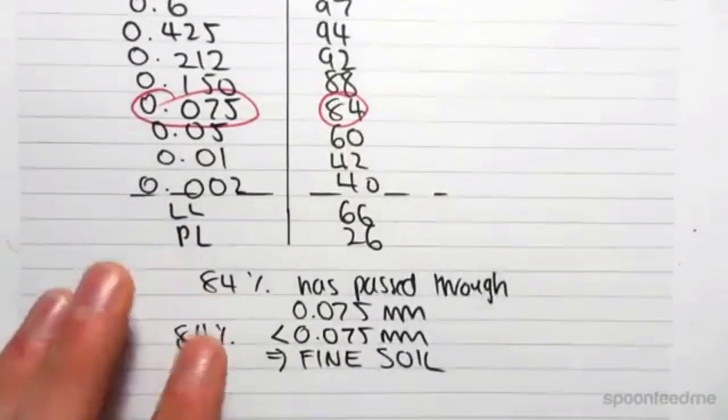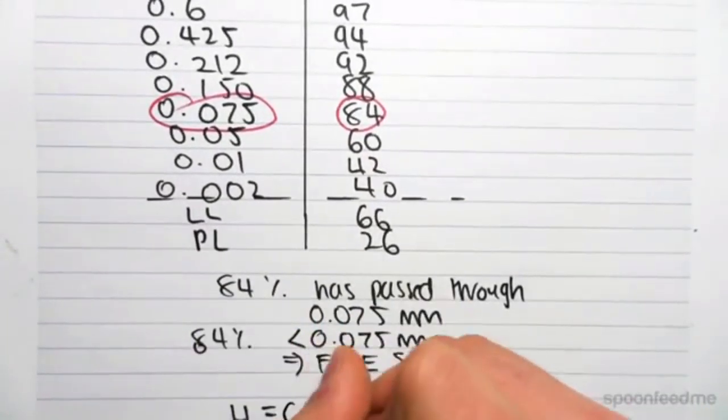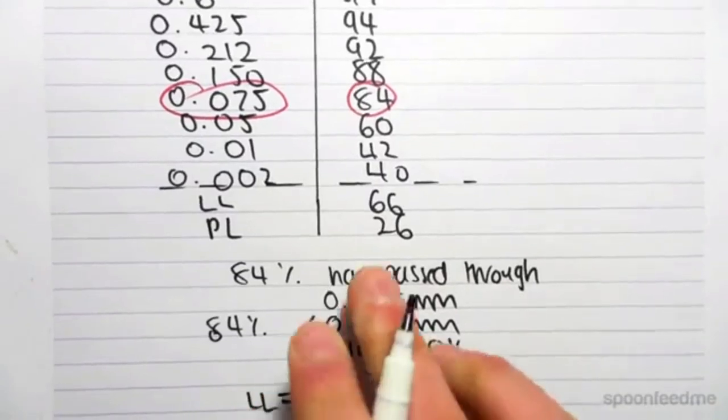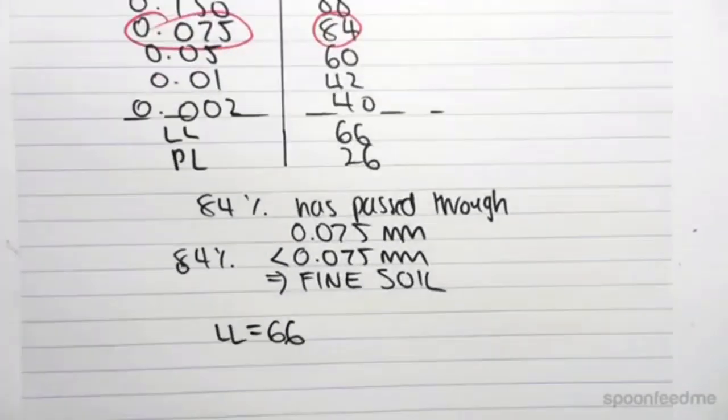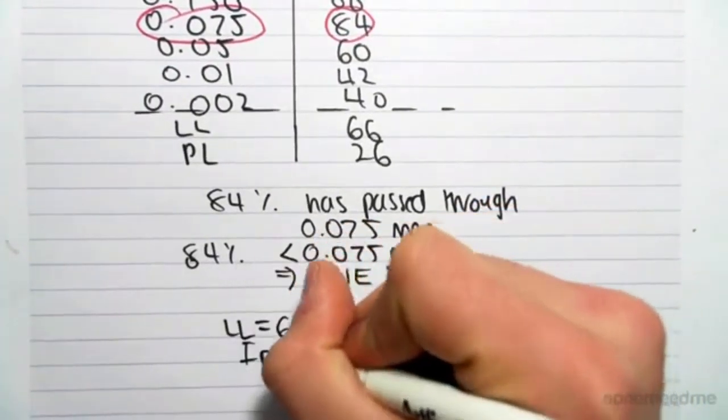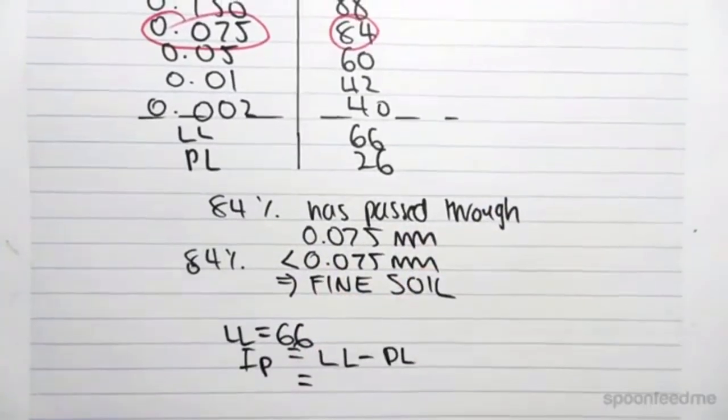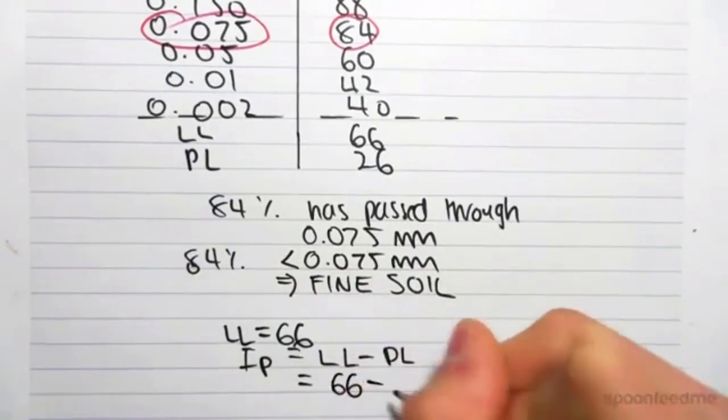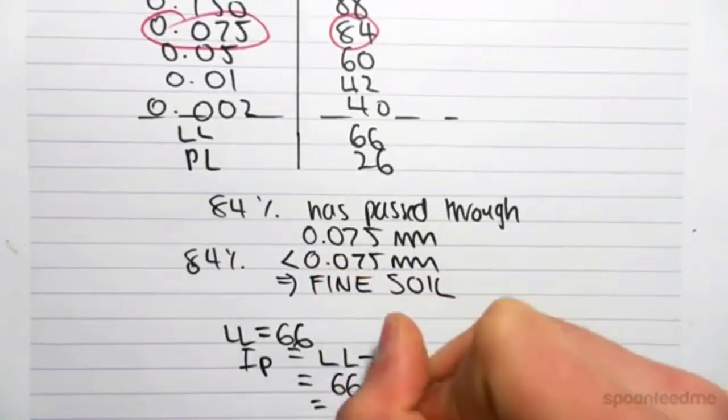So if we were to go find them, we know we've been given the liquid limit equals 66, and the plastic limit is 26. But we need the plasticity index, and we know from the previous video, that the plasticity index, I subscript P, is equal to the liquid limit minus the plastic limit, which in our case will be 66 minus the plastic limit, which is 26, and this will equal 40.